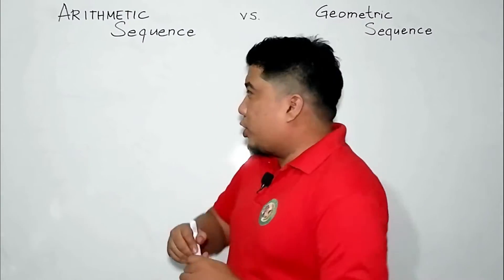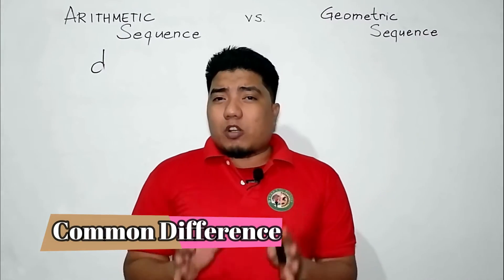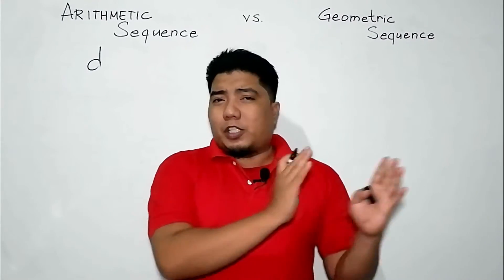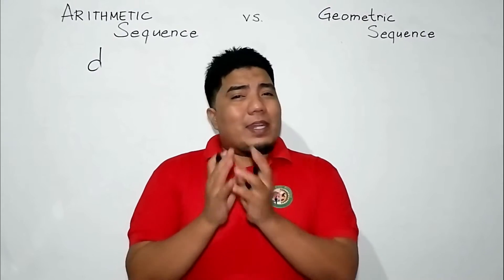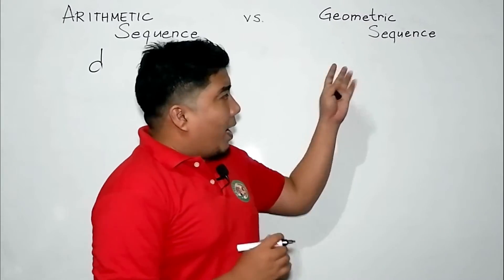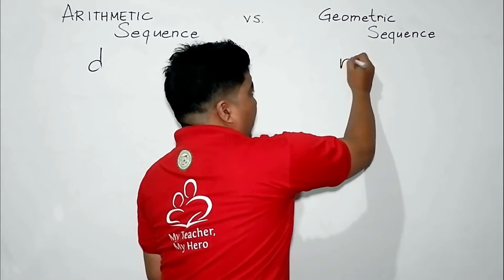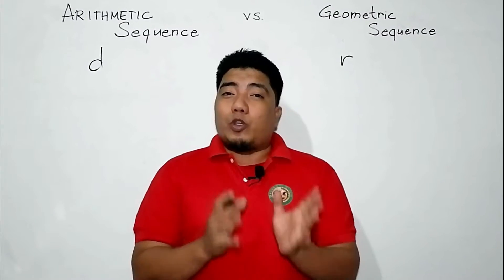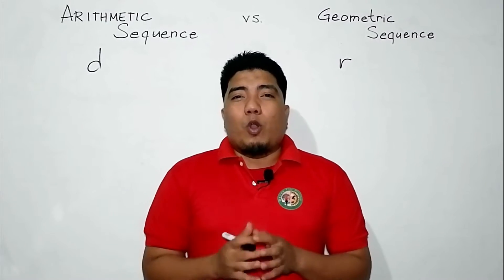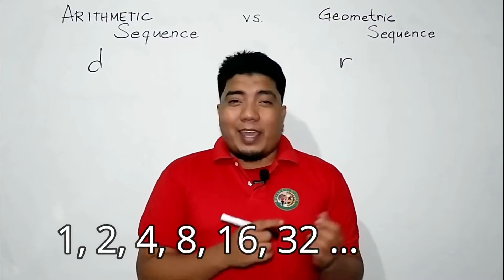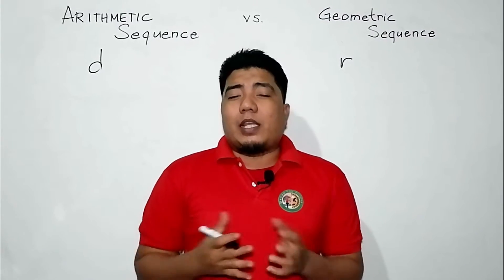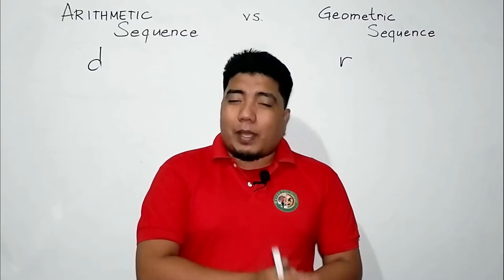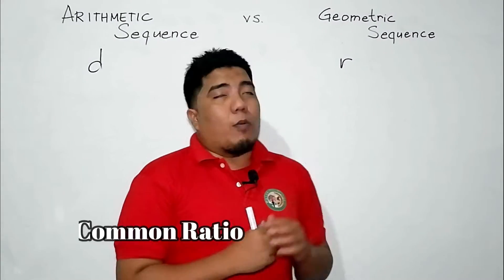For arithmetic sequence, we always use D — D stands for the common difference — meaning if your sequence has a difference that is common to any pair from the given sequence, then that sequence is said to be arithmetic. While in the geometric sequence, we use R. R stands for common ratio. The ratio is basically the factor we use in order to get to our next term. For example, we have 1, 2, 4, 8, 16, 32, and so on. We are using the factor of 2, multiplying each term by 2 to get the next term, and that 2 is what we call the common ratio.